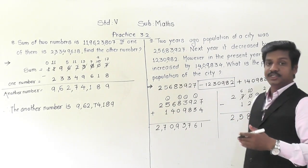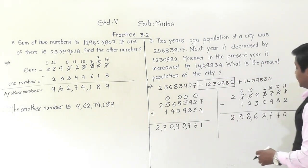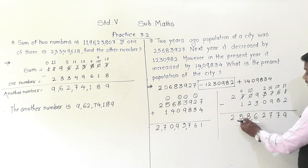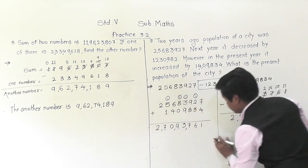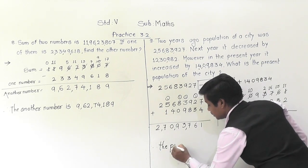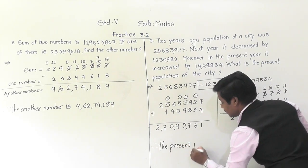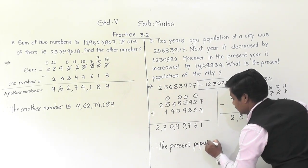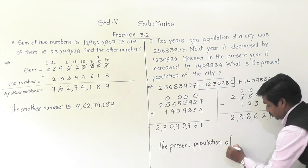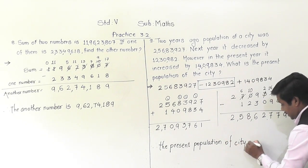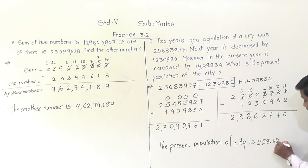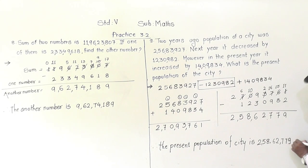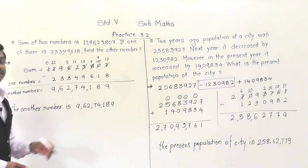So the current population of the city is 2 crore 58,62,779. The present population of the city is 2,58,62,779. Understood? Pause this video and write this in your notebook.